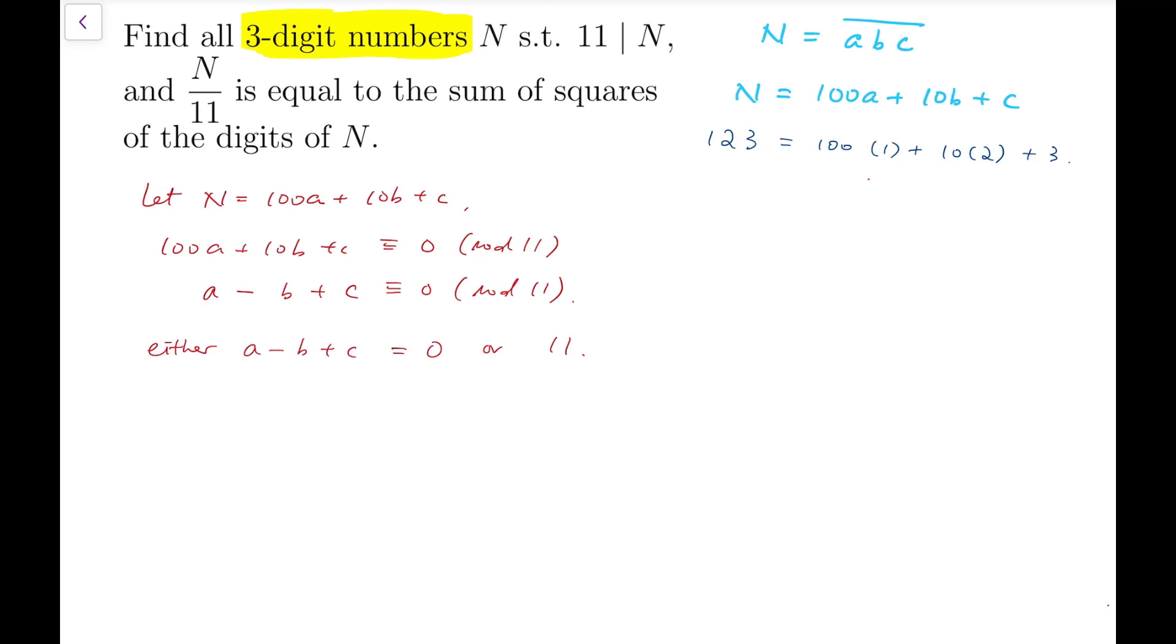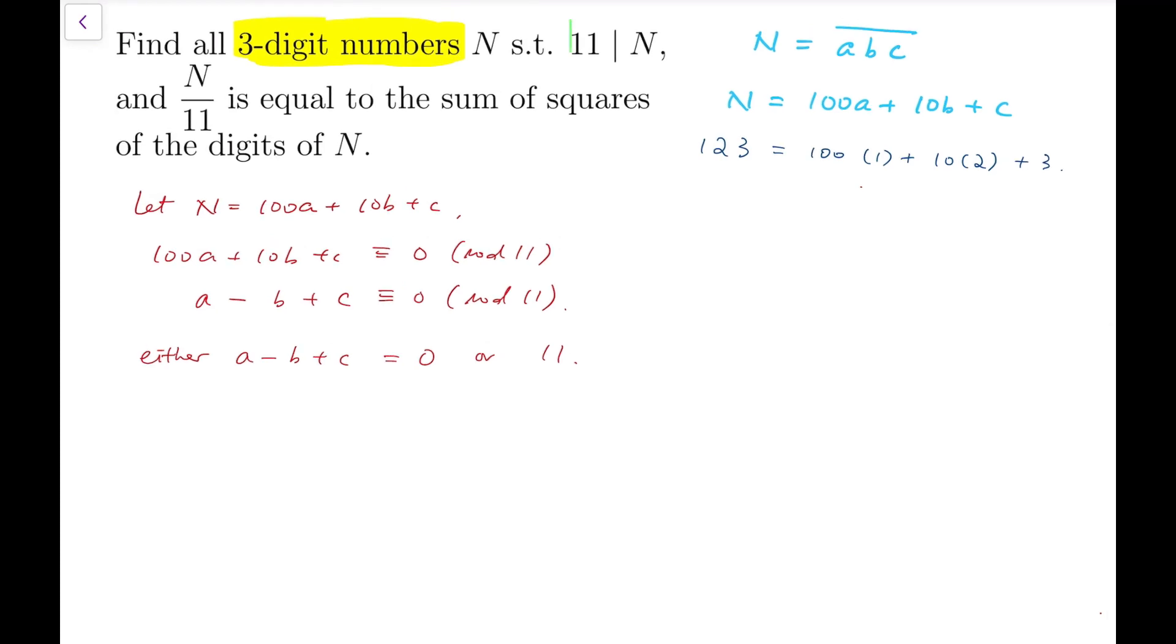Now, after exhausting the fact that N is a multiple of 11, I'm now going to use the second fact, which is that N divided by 11 is equal to the sum of squares of the digits of N. So N equals 100a plus 10b plus c divided by 11 equals a squared plus b squared plus c squared.